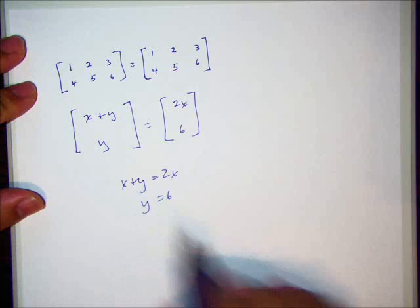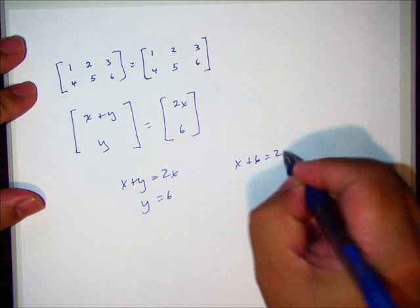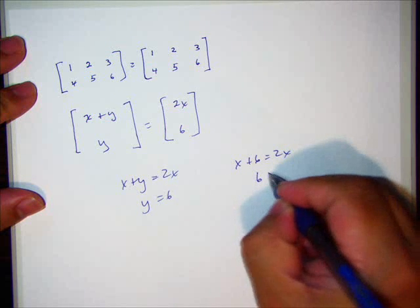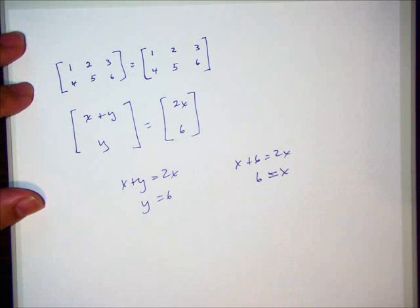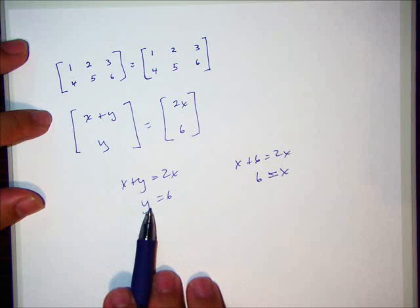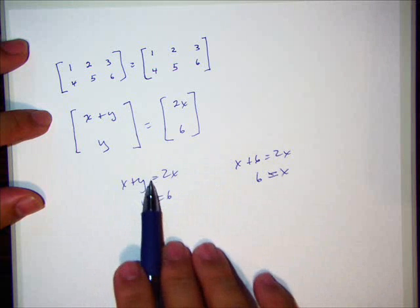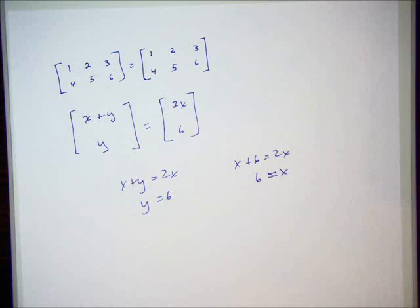So then you're expected to solve for each of the variables. We already know that y is 6, we can plug it in here, we get x plus 6 equals 2x. So x equals 6. So looking at this equation, by our definition we set up two other equations that don't involve matrices, and then solve for the missing variables. That's it.